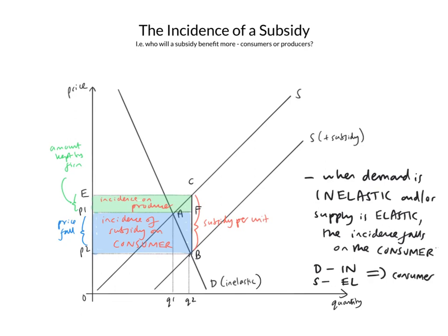In this case, the incidence of the subsidy falls almost entirely on the consumer because the price fall is so much larger as a proportion of the subsidy than the amount kept by the firm. So that's the incidence that goes to the consumer, and that small amount is the incidence on the producer — it's about two-thirds, one-third. The reason for that is the relative inelasticity of the demand curve. And this gives us our first rule: when demand is inelastic, or when supply is elastic, or both, the incidence falls mainly on the consumer.